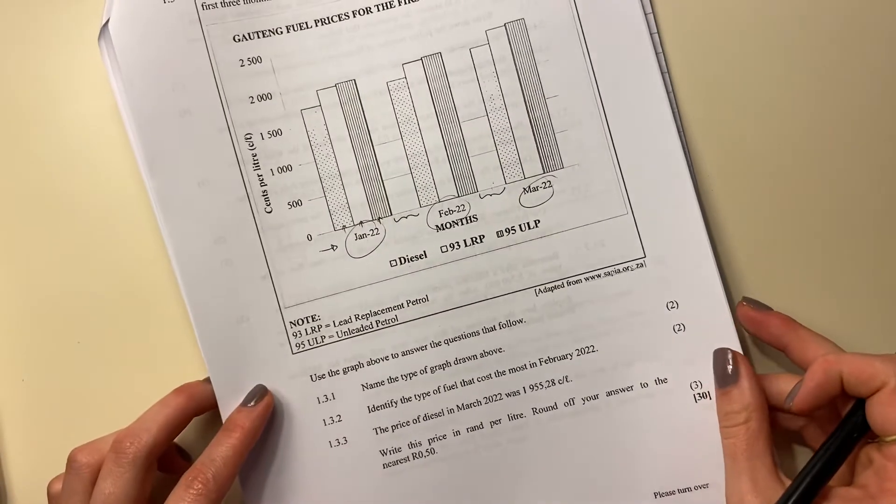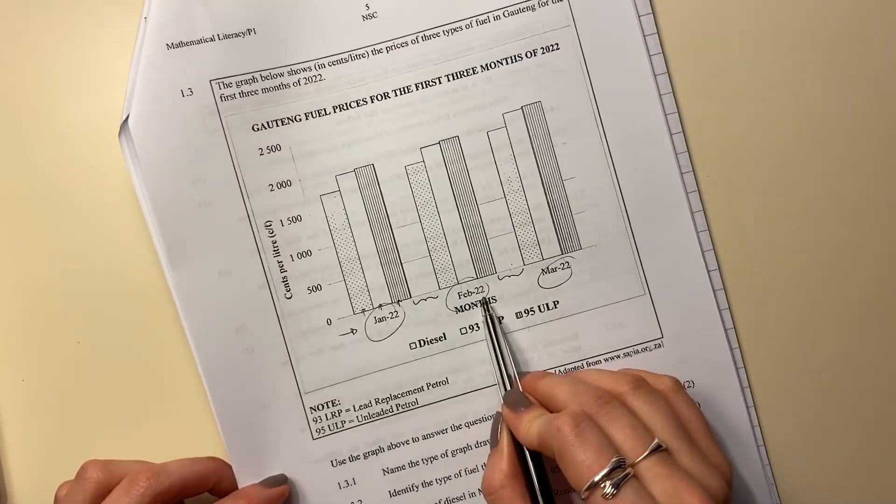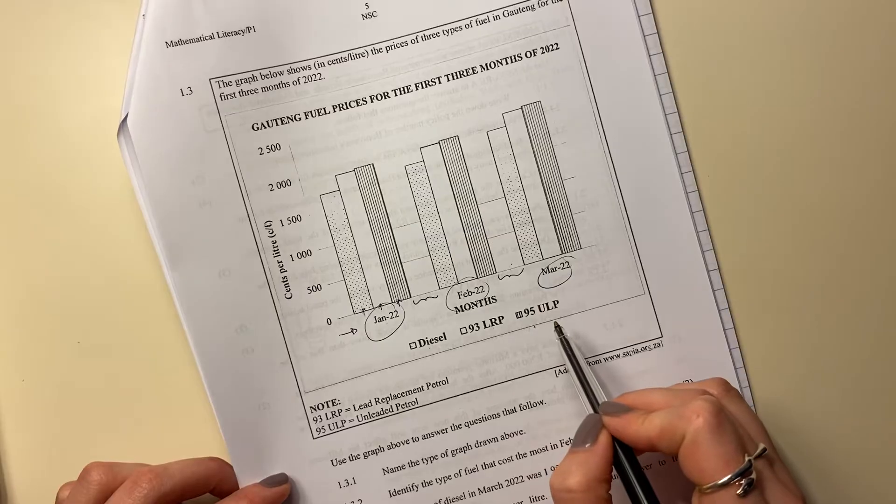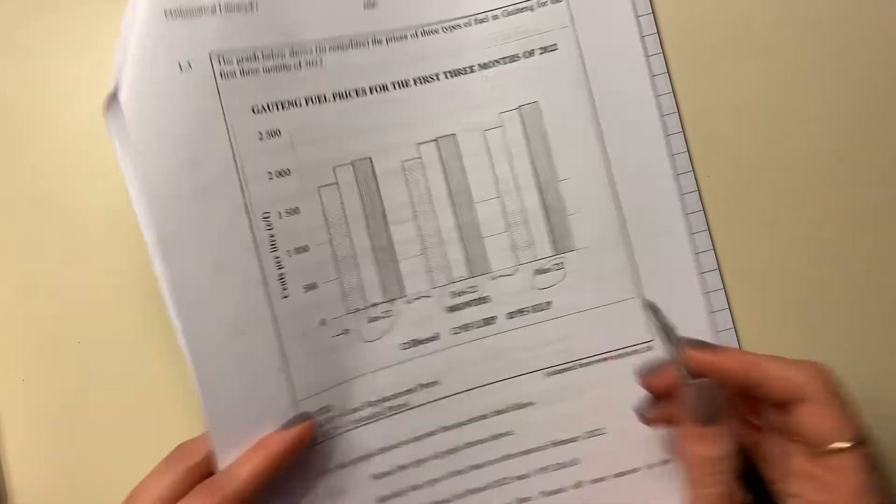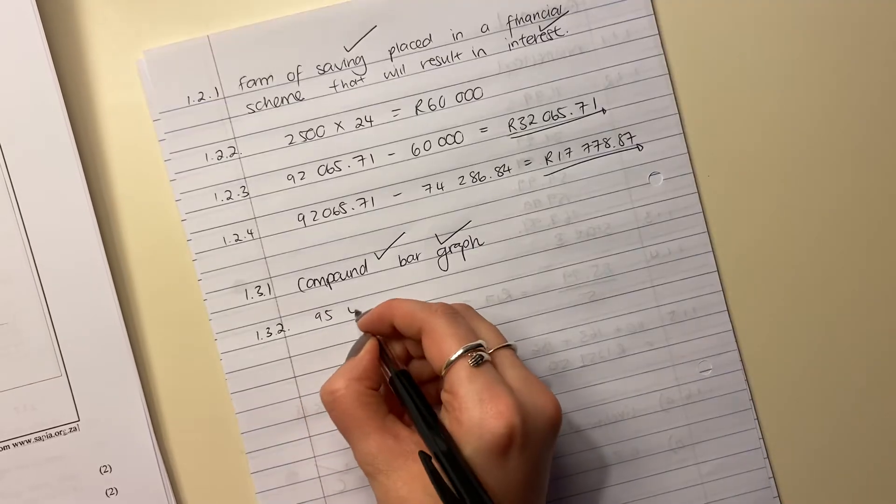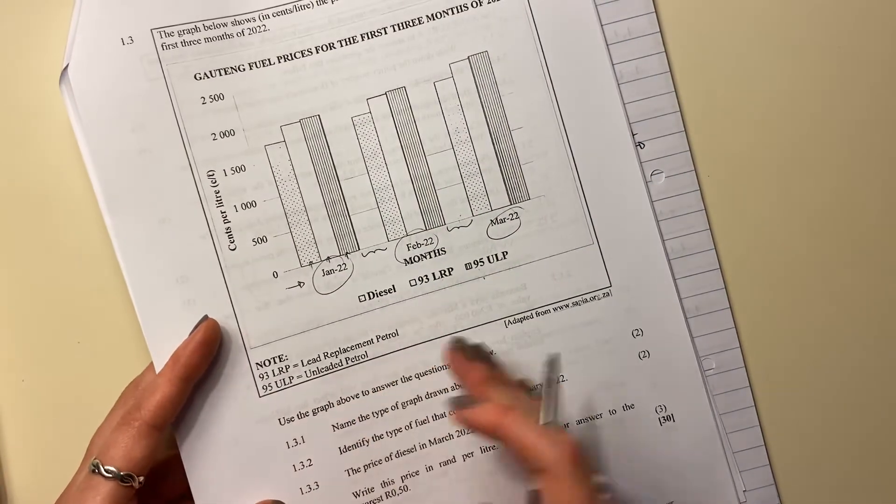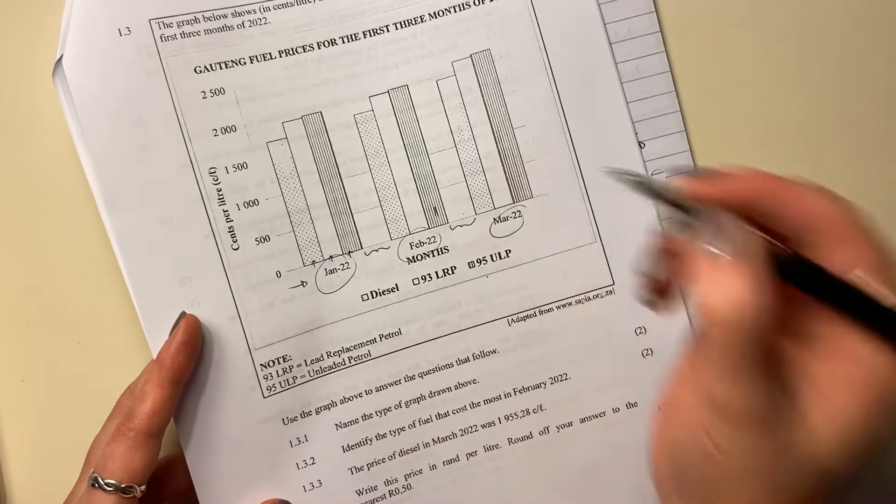Then it says here, identify the type of fuel that costs the most in February 2022. February 2022, it is ULP or it is going to be, I'm sorry, it's 95 ULP. So don't forget about the 95. So 95 ULP. If you wrote unleaded petrol, that's also completely fine, but make sure that you are identifying it correctly as this one here.